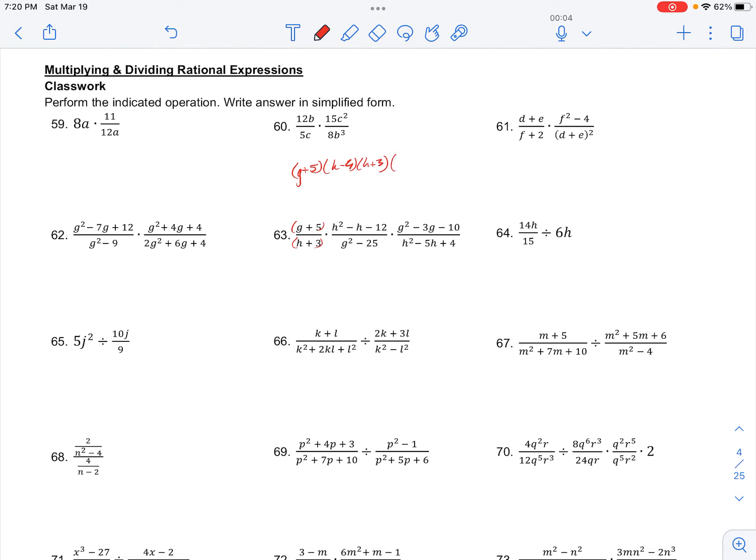And then we also have g² - 3g - 10. So that factored is (g - 5)(g + 2).